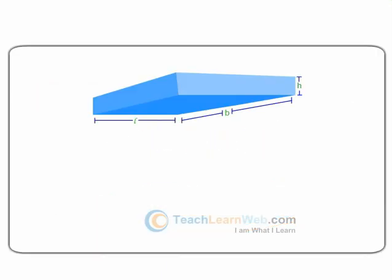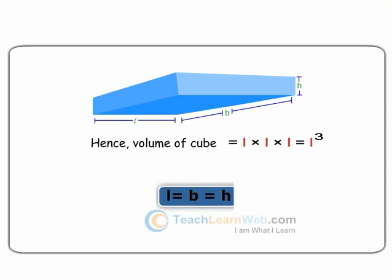Since L into B is the area of its base, we can also say that volume of cuboid is equal to area of the base into height. The cube is a special case of a cuboid where L is equal to B is equal to H.